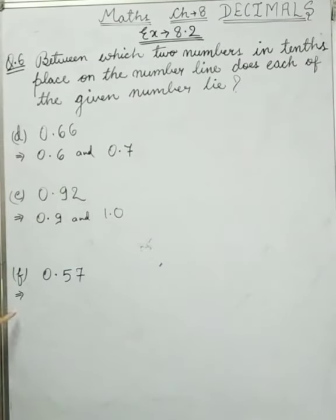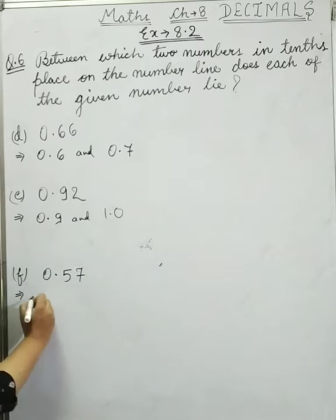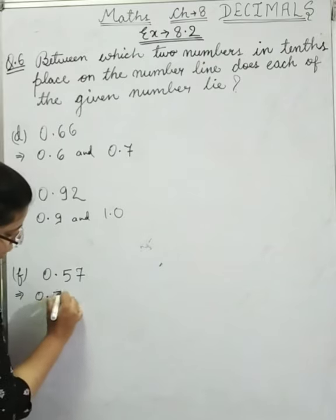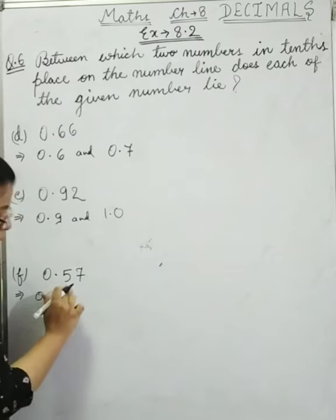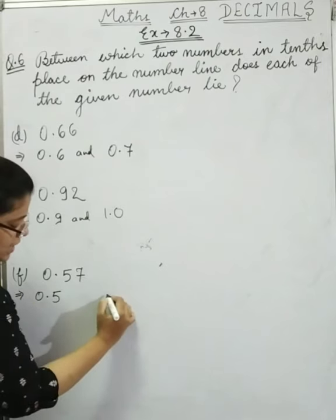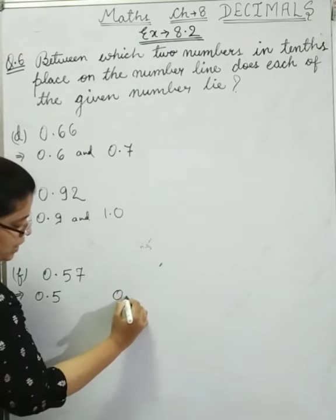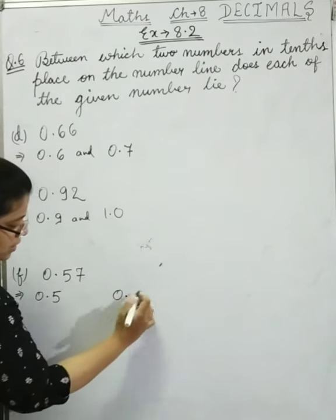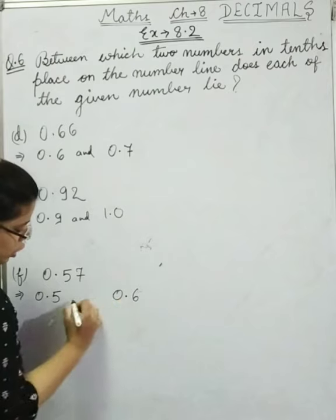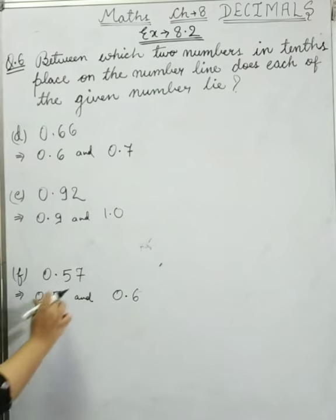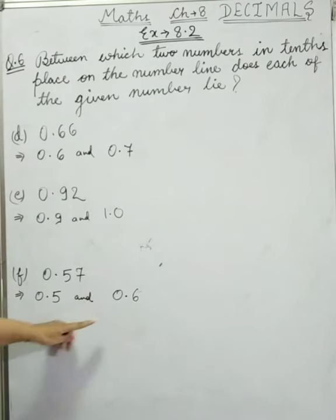Now next is f: 0.57. So here it is 0.5, and the next is 0.6. So 0.5 and 0.6. If we check it, 0.57 lies between 0.50 and 0.60. I hope this question is clear to you, and if you have any doubt you can ask me.